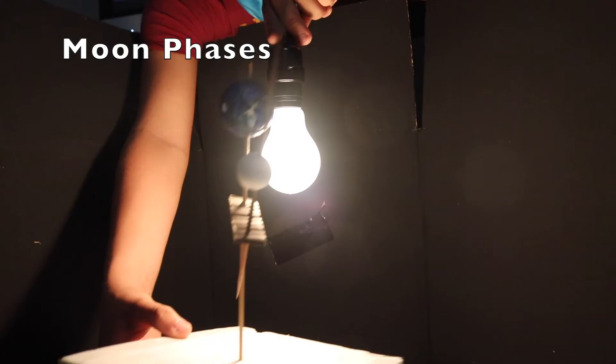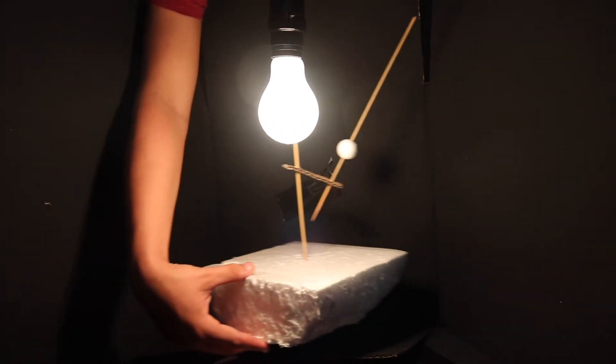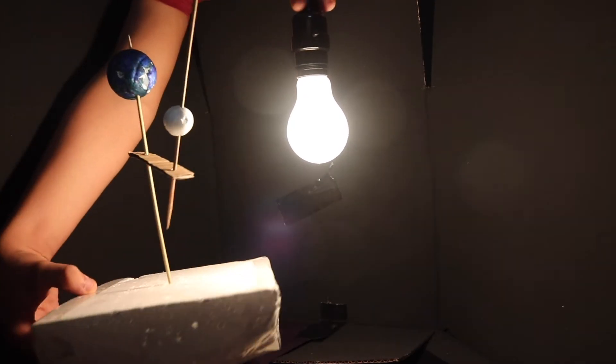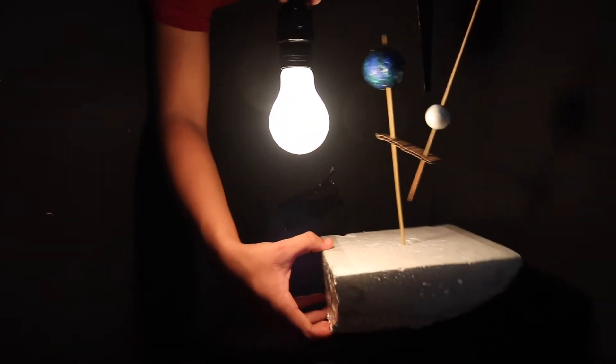As we move on to moon phases, we will talk about what they are and what causes them to occur year-round. A moon phase is how much of the moon that appears to be lit up by the Sun. We have labeled the portion that is illuminated as eight phases.